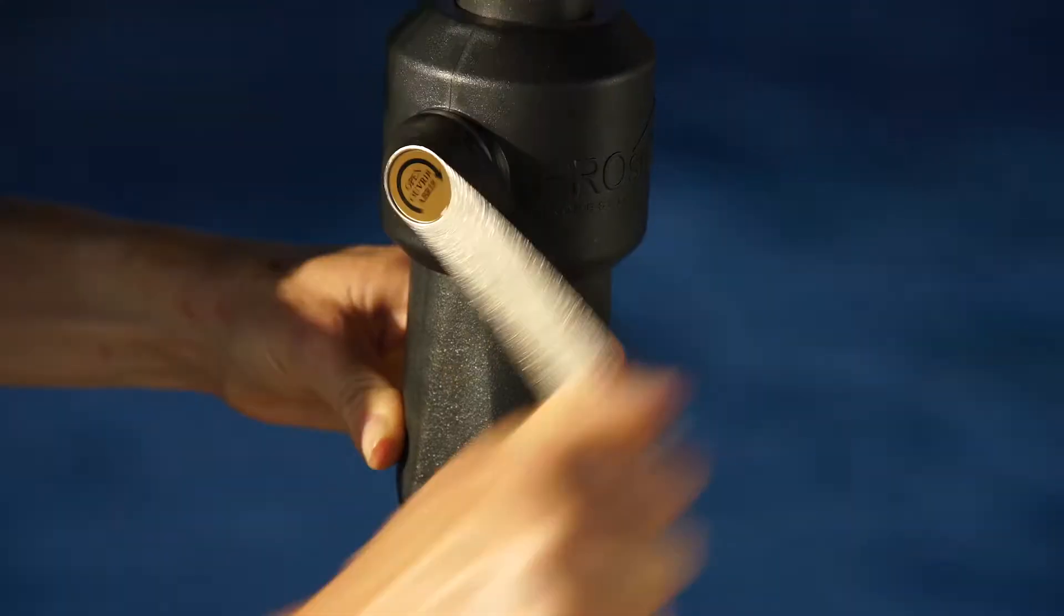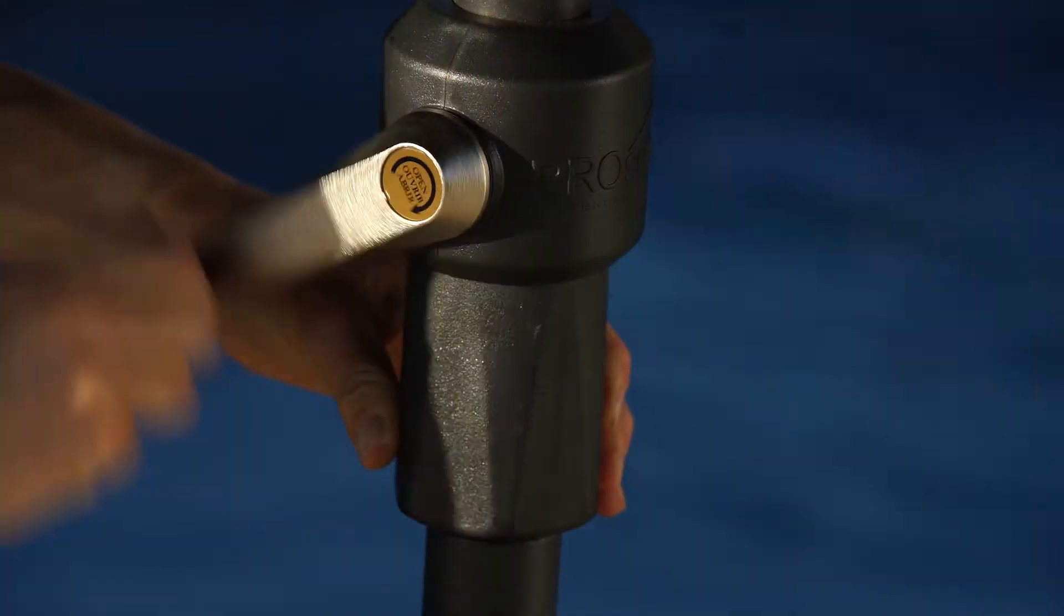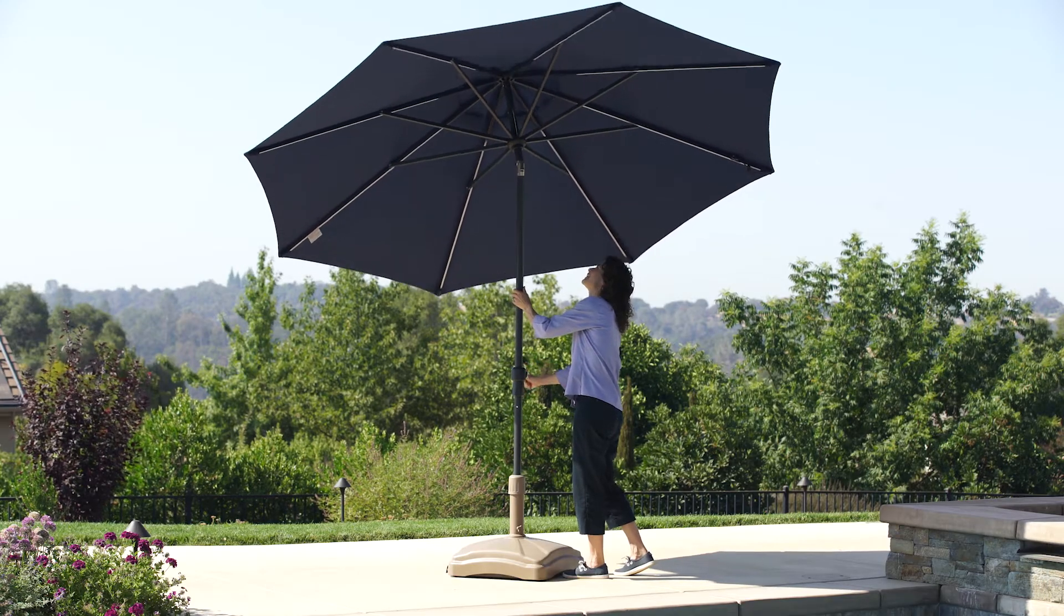To tilt the umbrella, continue rotating the crank clockwise. When the hub reaches the stop ring, the umbrella will begin to tilt. Keep rotating the crank handle until the umbrella is fully tilted or tilted to the desired position.